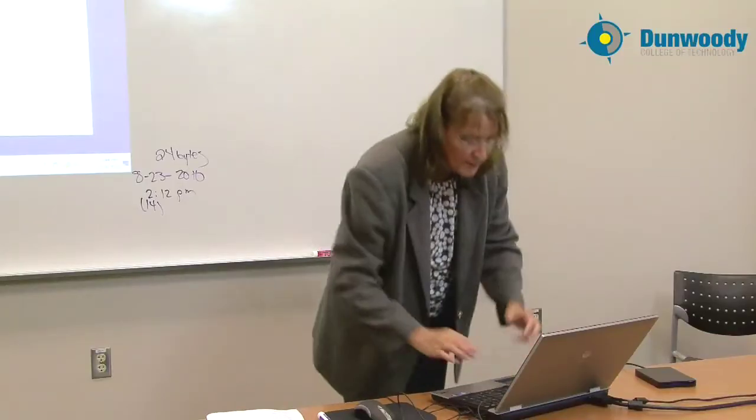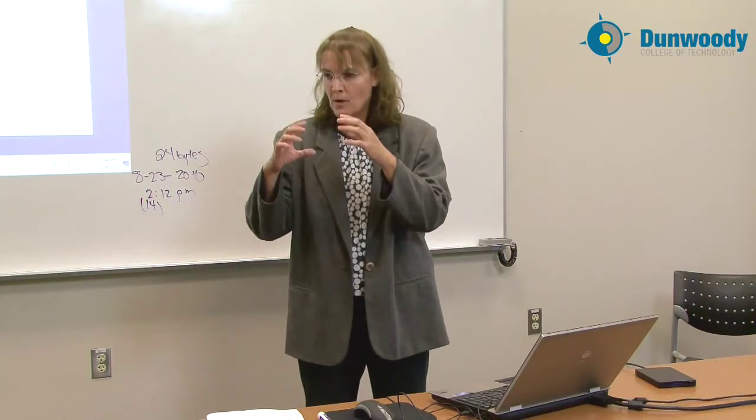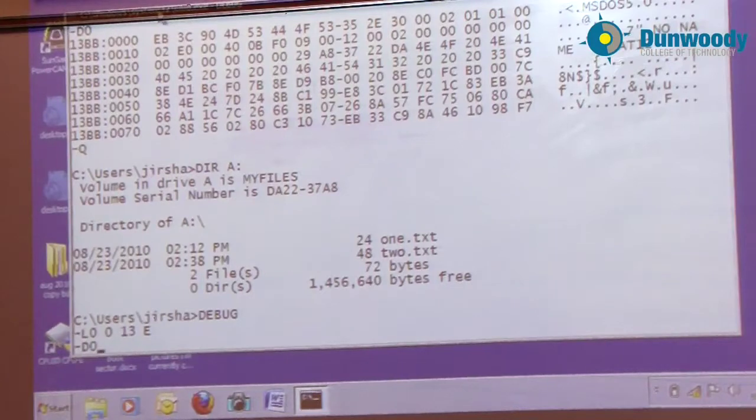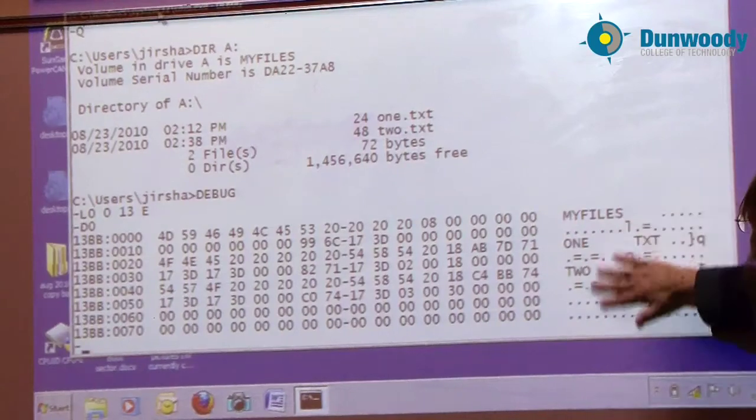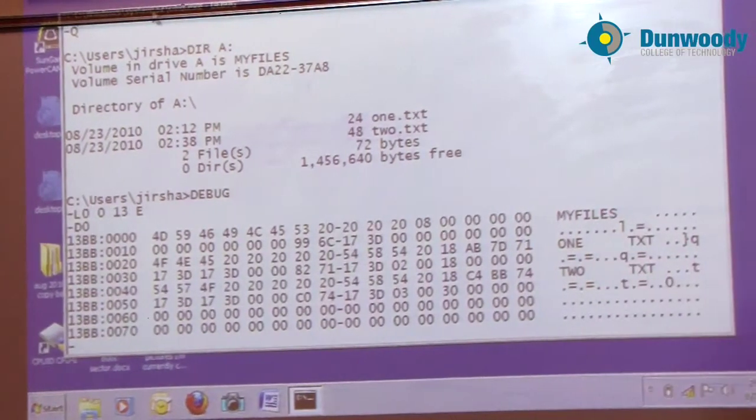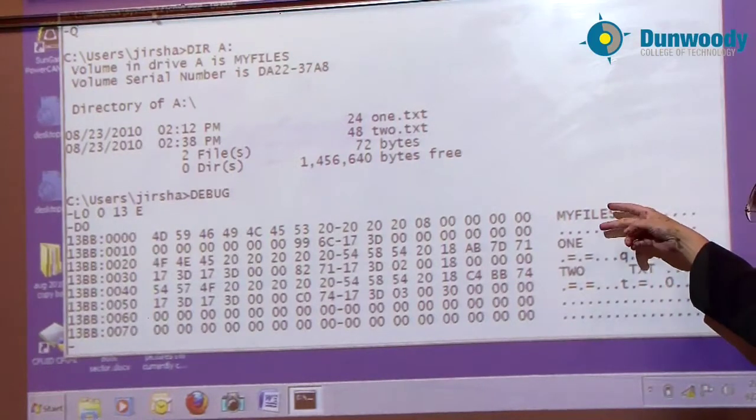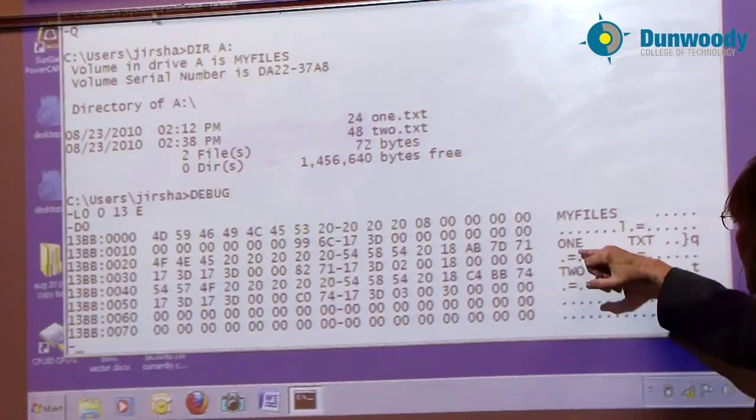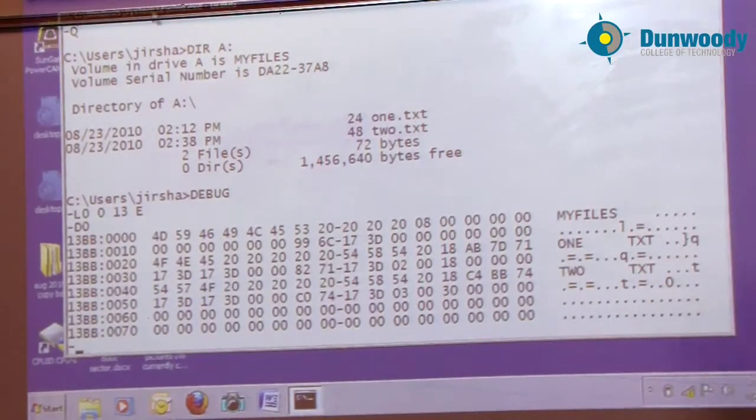Now I'm going to dump the first 128 bytes from memory onto the screen. And here I can see if you look over here at where debug attempts to convert to ASCII, you can kind of see the three different entries: one entry for the volume label, one entry for the file name 1.txt, and one entry for the file name 2.txt.